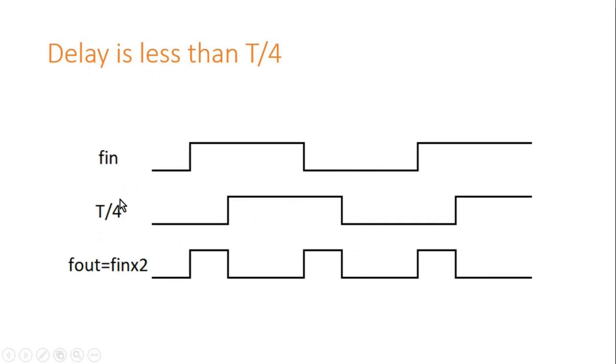So my signal, that is T/4, will be delayed but slightly less than T/4. Now if you put XOR gate at fin and T/4 signal, you will get fout which will be again a frequency multiplied by 2 only. There is no change, but your duty cycle will be changed.